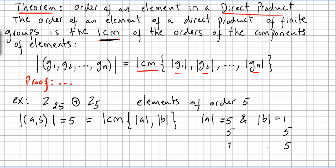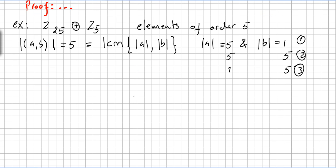Case 1: order of a is 5 and order of b is 5. In Z25 there are 4 choices for a, and in Z5 there are 4 choices for b. So this gives 16 elements of order 5.